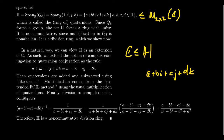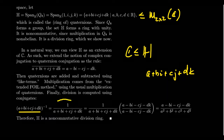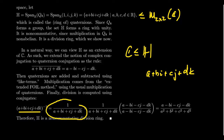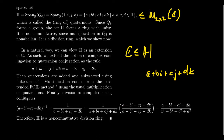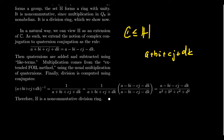Now let's get to the division — how is this a skew field, a non-commutative skew field? If I can tell you what the inverse of an element is, then we can do division, because division is just multiplication by an inverse. The inverse of a generic quaternion should look like a reciprocal. What we do, like we did with complex numbers, is take the reciprocal and multiply the top and bottom by the conjugate. The numerator becomes one times the conjugate — so the numerator is just the conjugate. The denominator is the fascinating part.